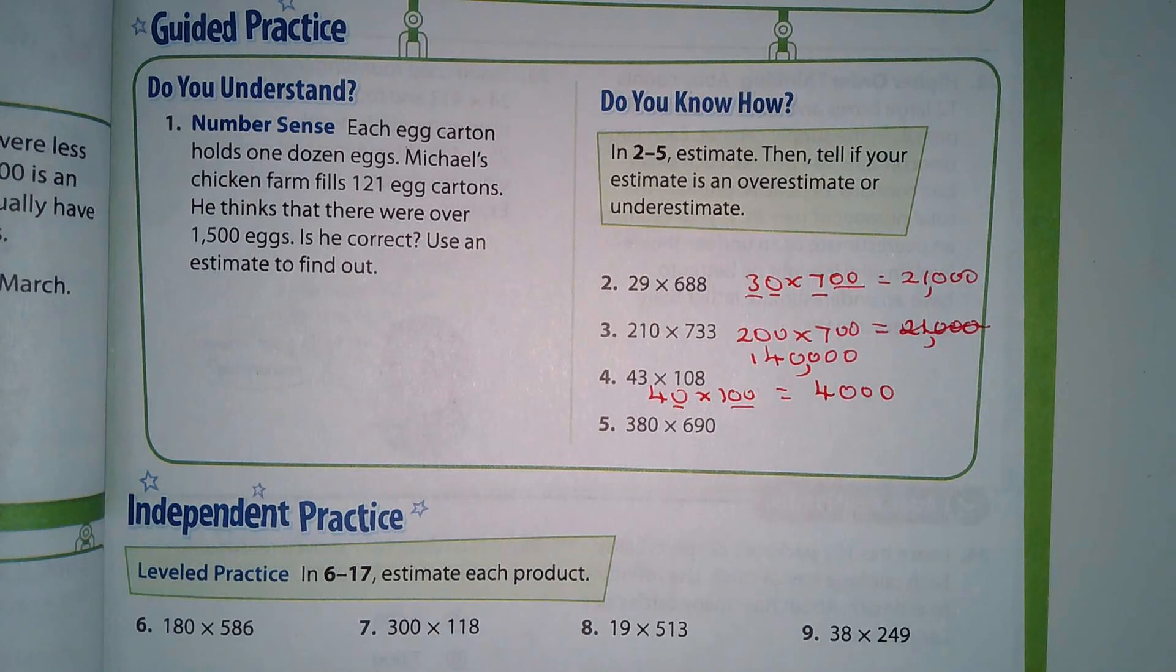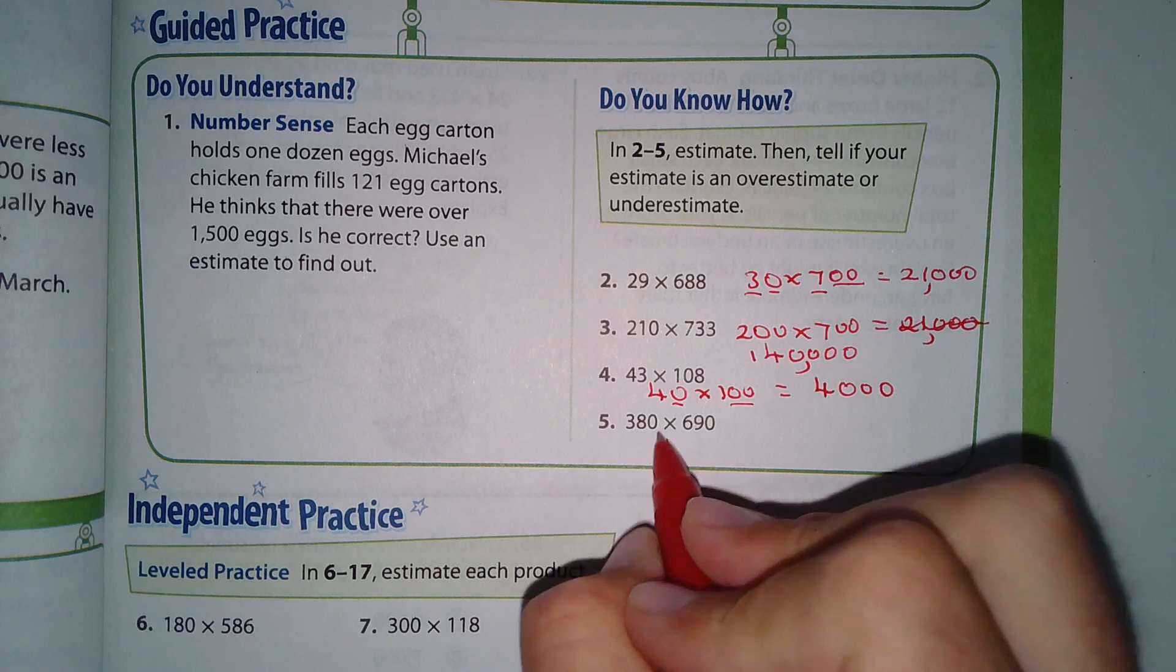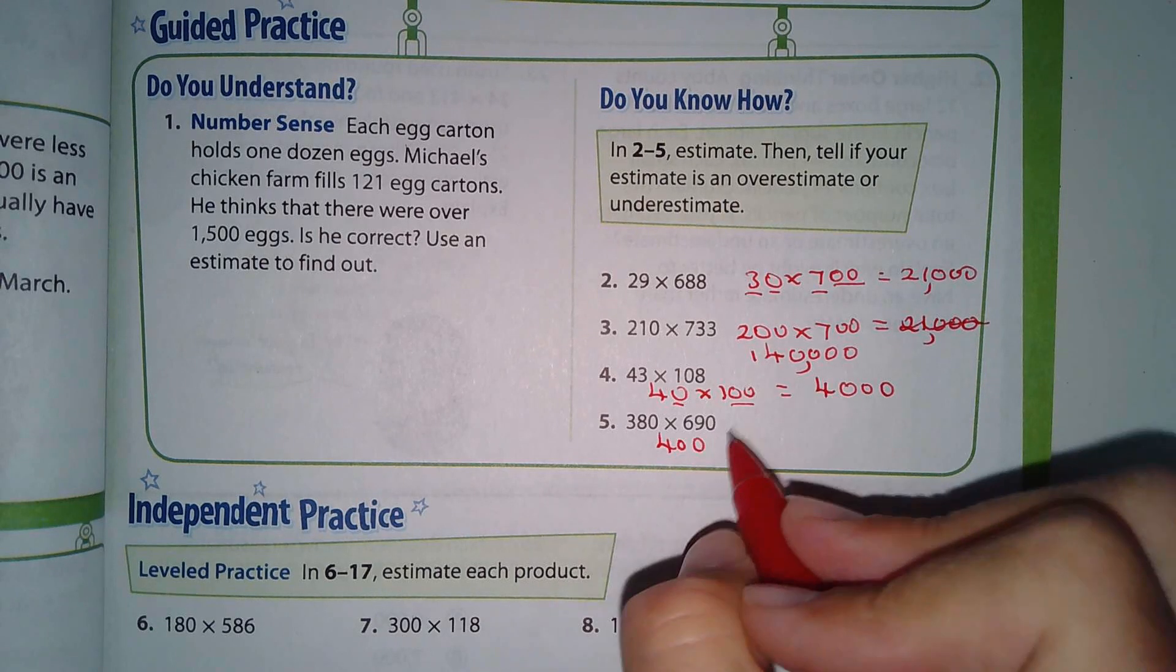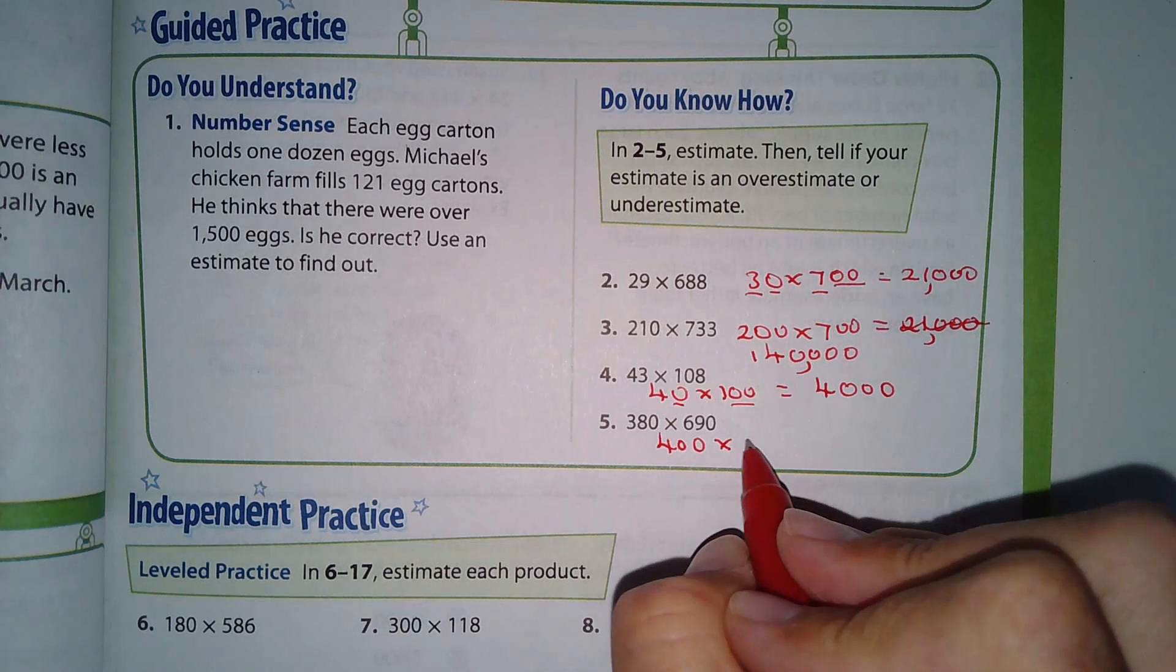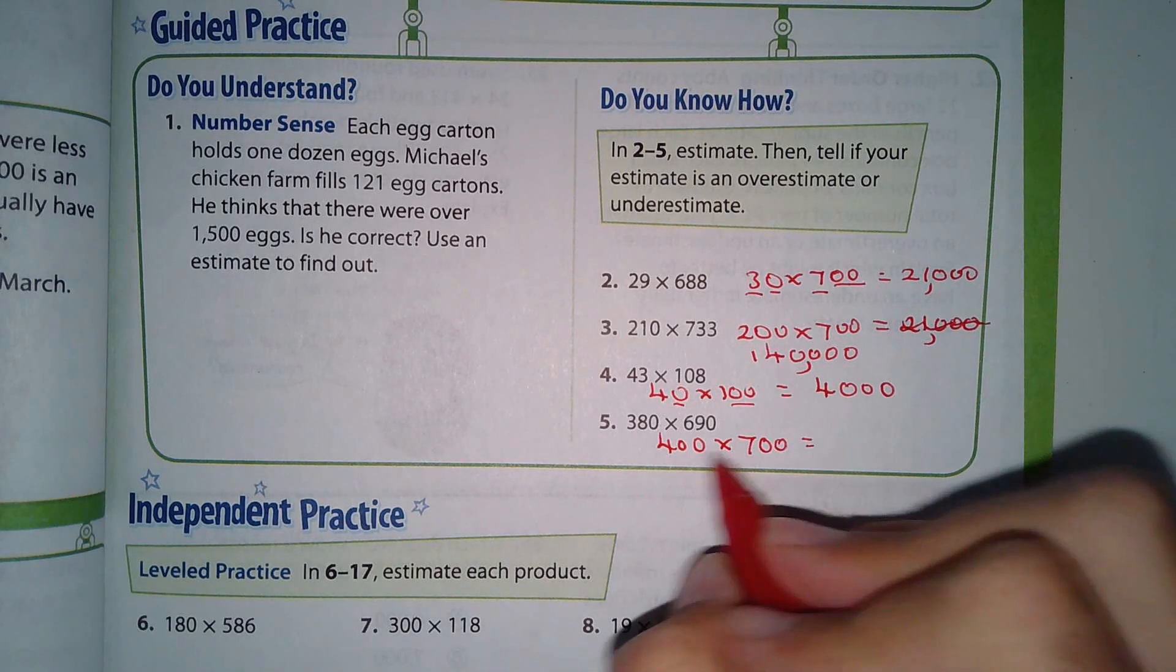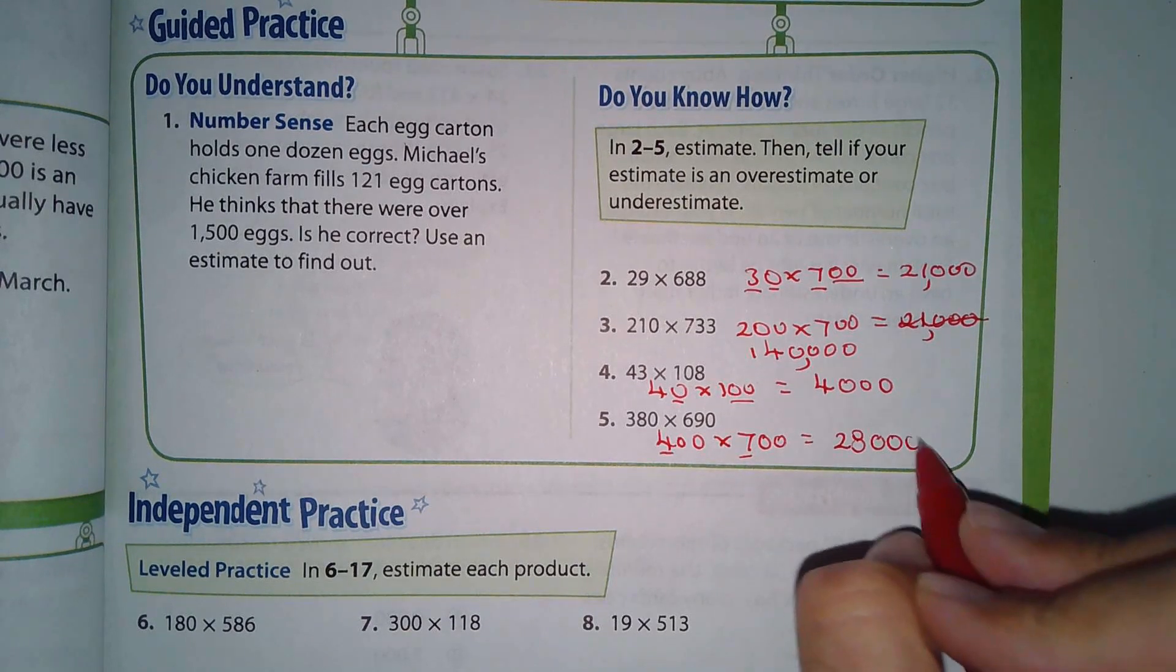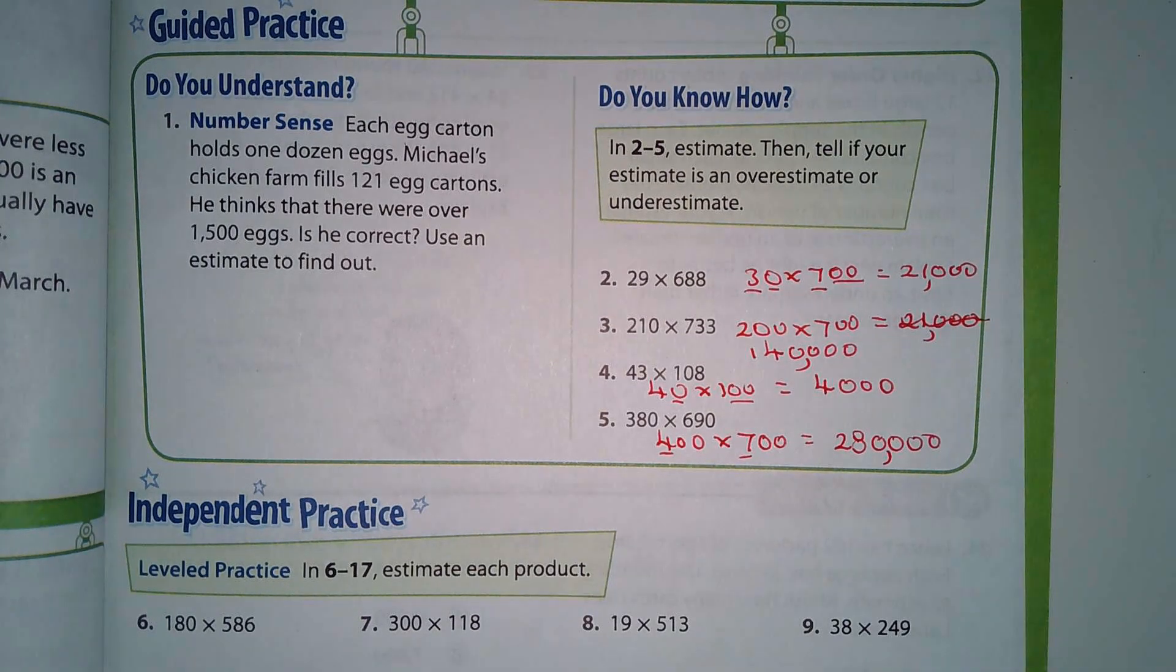This could be 40 times 100, so that's four with three zeros, so that's four thousand. We could leave it as 380 or call it 400, and I think I'd make it times 700 to make it easier. That's going to be four times seven, which is 28. How many zeros? Four, so two hundred and eighty thousand. How everybody estimates is going to be a little bit different, but that's what you guys are doing here.